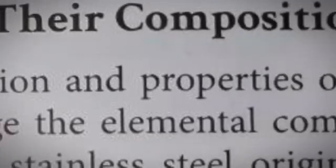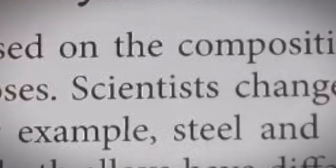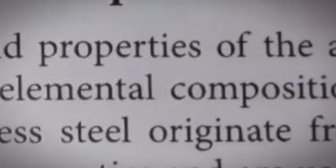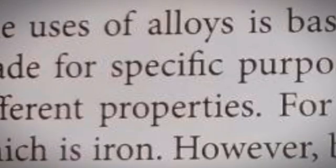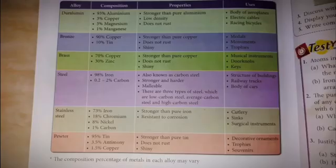Please keep in mind that the uses of alloys are based on the composition and properties of the alloy. Alloys are made for specific purposes — scientists change the elemental composition to produce alloys with different properties. Now let's take a look at examples of alloys and their composition, properties, and uses.